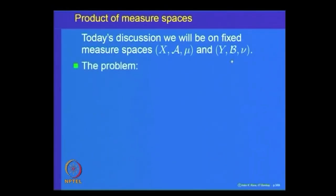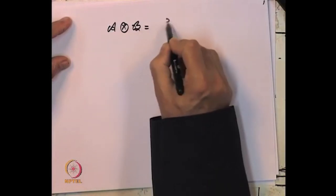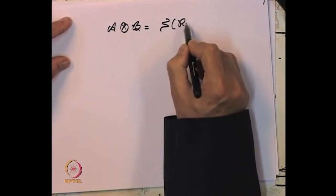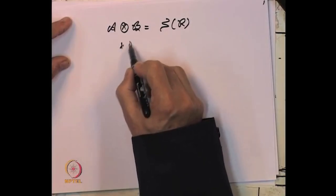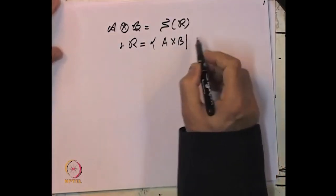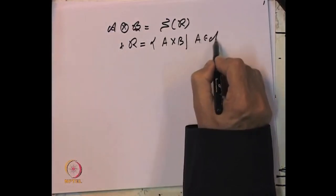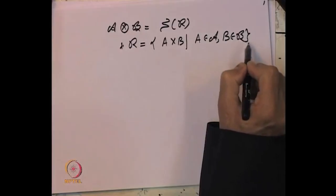We have already defined the notion of the product sigma algebra, namely A⊗B. This is the sigma algebra generated by all rectangles, where rectangles are defined as sets A×B, with A belonging to the sigma algebra A and B belonging to the sigma algebra B.